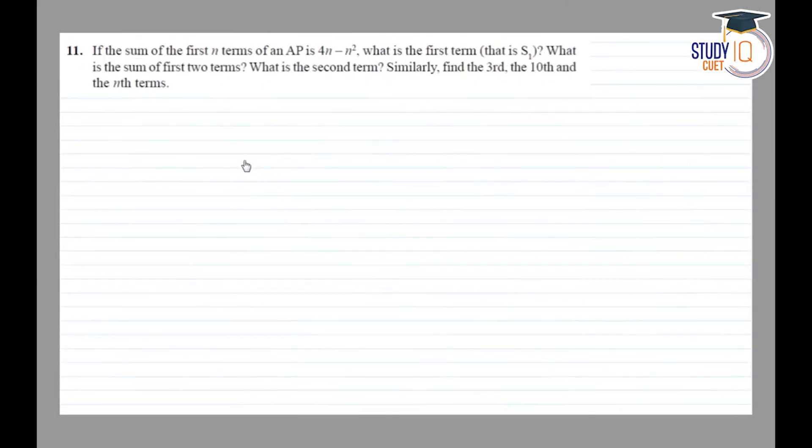Class 10 NCERT Chapter 5 Exercise 5.3 Question Number 11. The sum of first n terms of an AP is 4n minus n square. What is the first term, that is s1? What is the sum of first two terms? What is the second term? Similarly find the third, tenth and nth term.